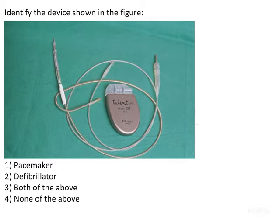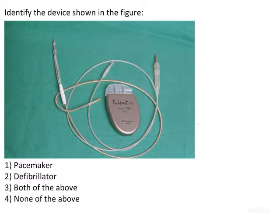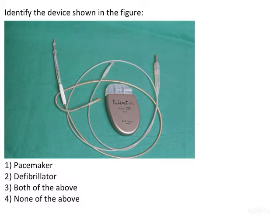The question is to identify the device shown in the figure. It's a very straightforward question. The options are either a pacemaker or a defibrillator. Both are electronic devices that pass electronic current used to either stimulate the heart to start beating or to regulate the number of heartbeats per minute as the contraction and relaxation of the heart proceeds.